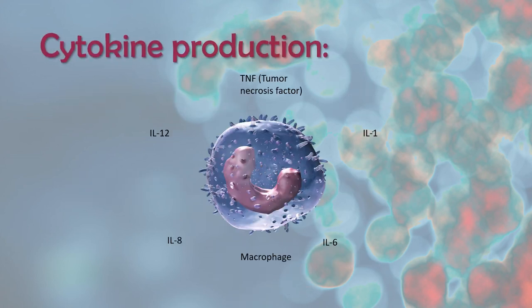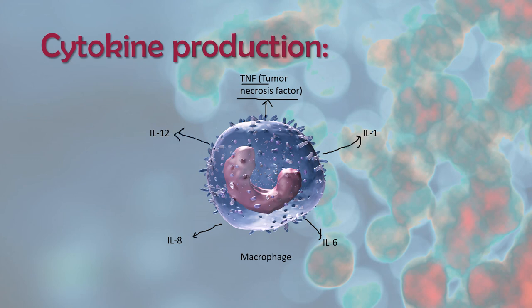The next function is cytokine production. The cytokines produced by macrophages and monocytes include TNF (tumor necrosis factor), interleukin-1, interleukin-6, interleukin-8, and interleukin-12. All these types of cytokines are secreted or produced by macrophages and are helpful during inflammatory responses.